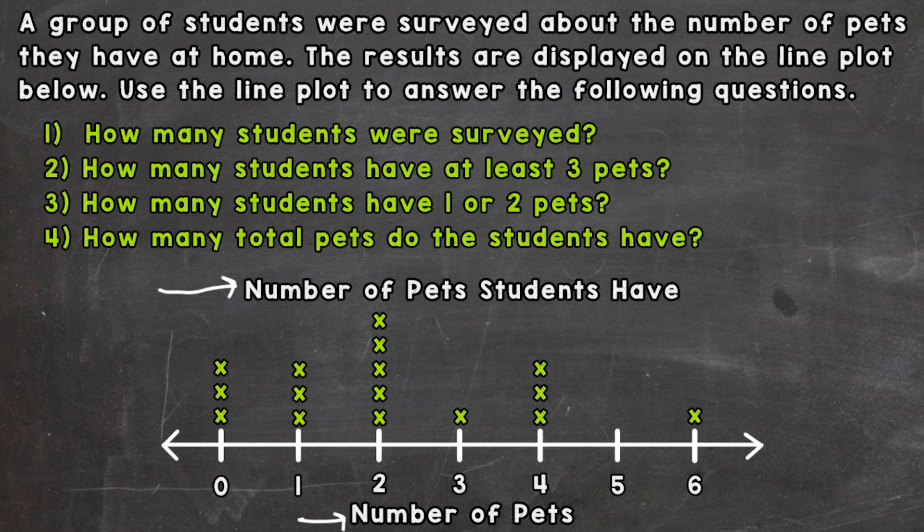So here we have for zero, we have three. For one, we have three. For two, we have five. For three, we have one. For four, we have three students. And for six, we have one student. Five, there's nothing there. There aren't any x's. So no students within that survey had five pets. And that's okay if you don't have x's above all of the numbers.